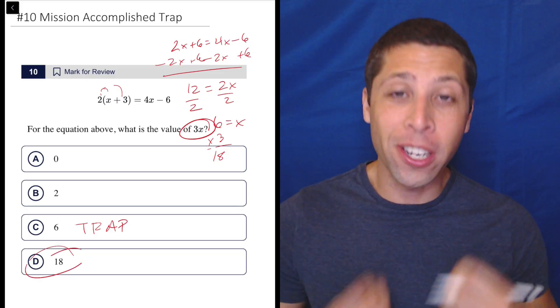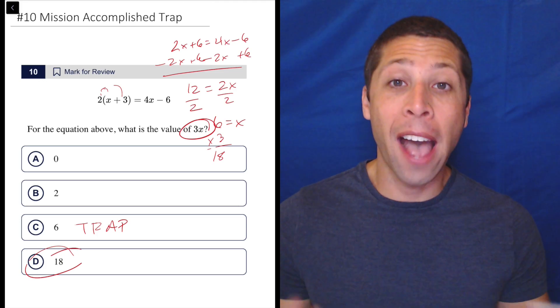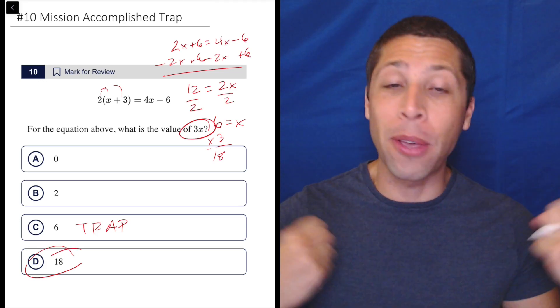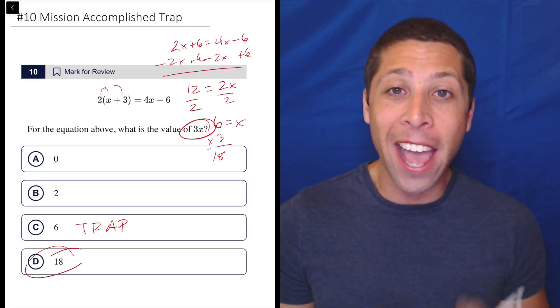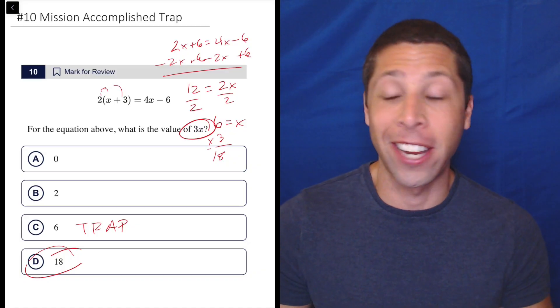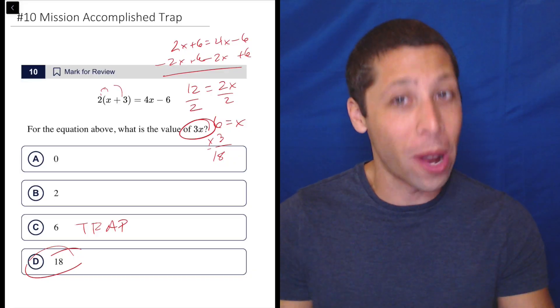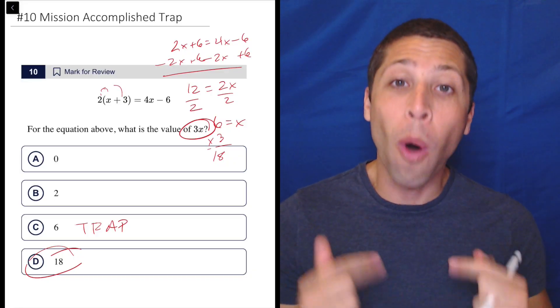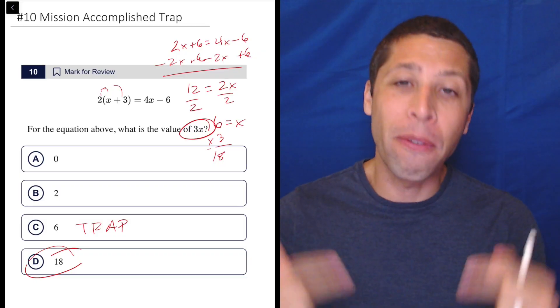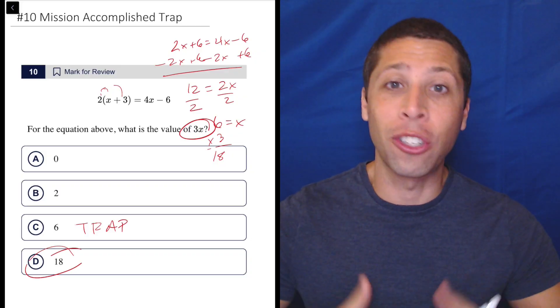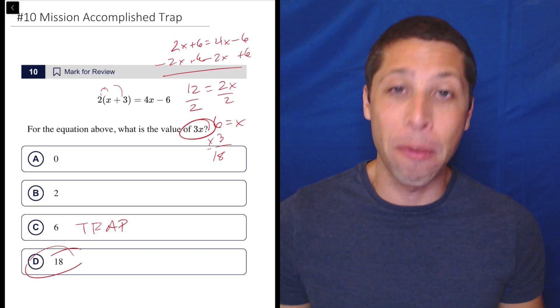But I call this a mission accomplished trap because we have these moments in math where we get an answer. We get x equals a number and we think, mission accomplished. That's the end of math. No more math necessary. The SAT definitely takes advantage of that. You will almost certainly see a question like this on your test. So make sure you always go back to the question before you select your answer to make sure that you're giving them what they want, not what just you feel like is the end of the math problem.